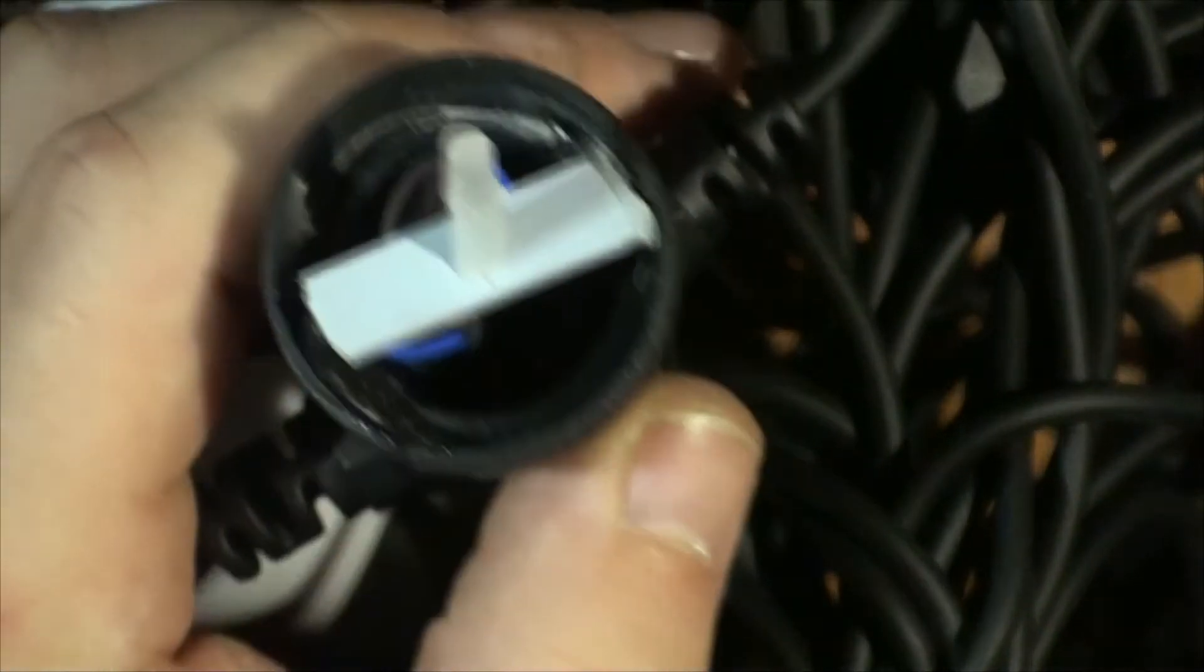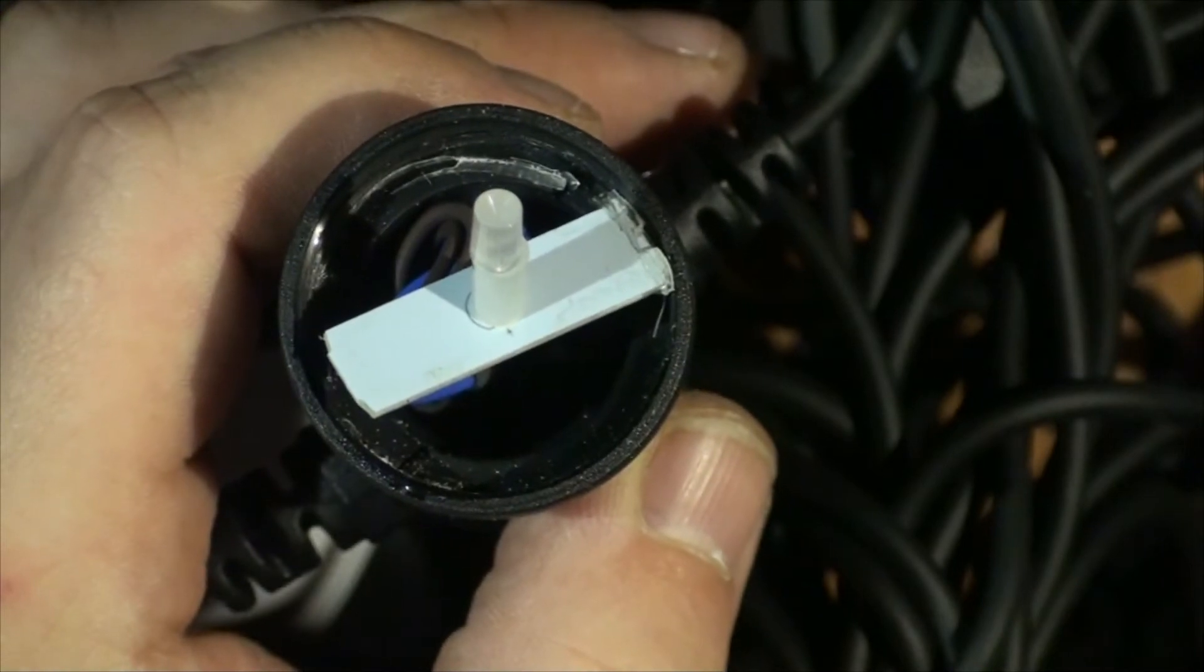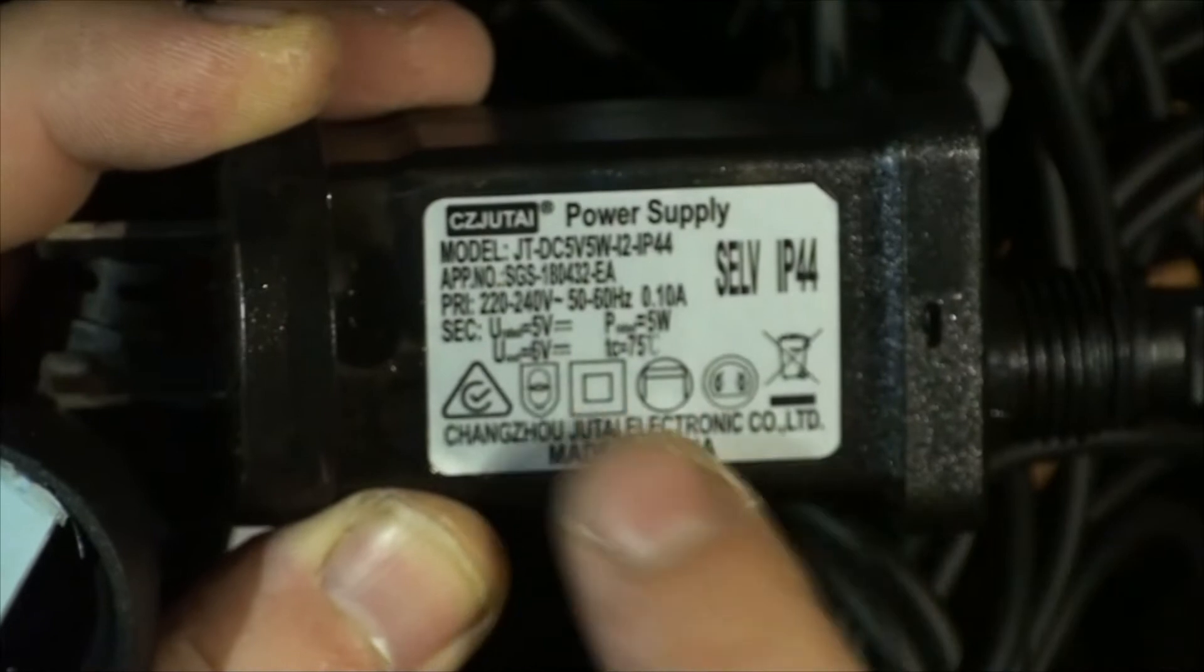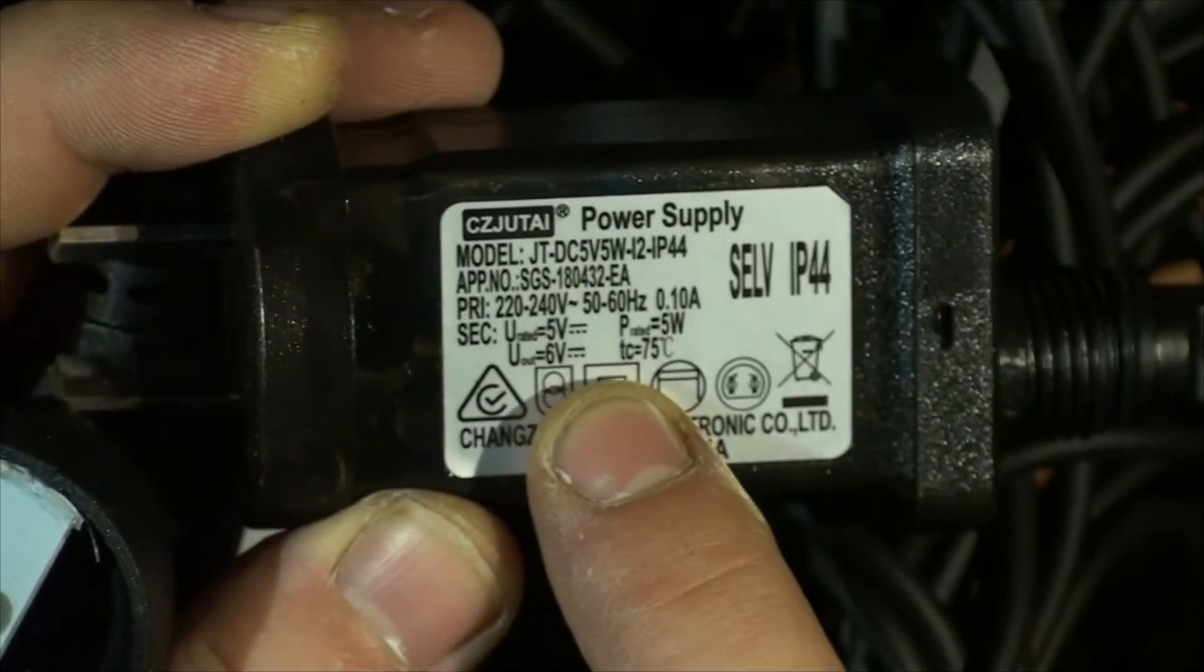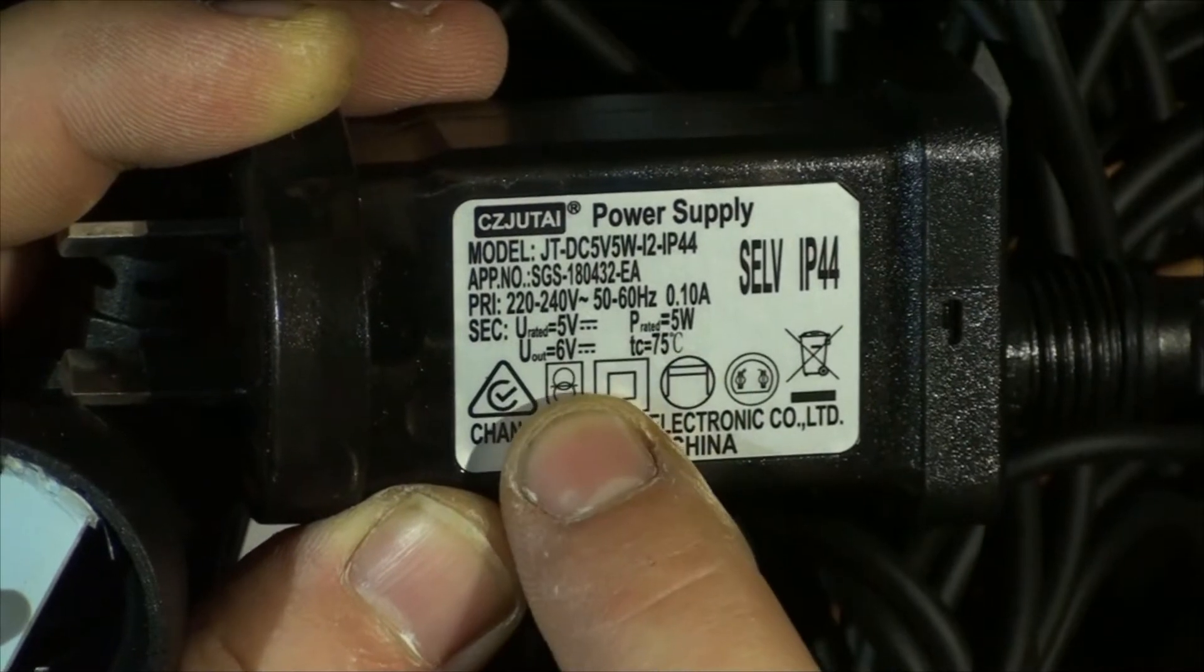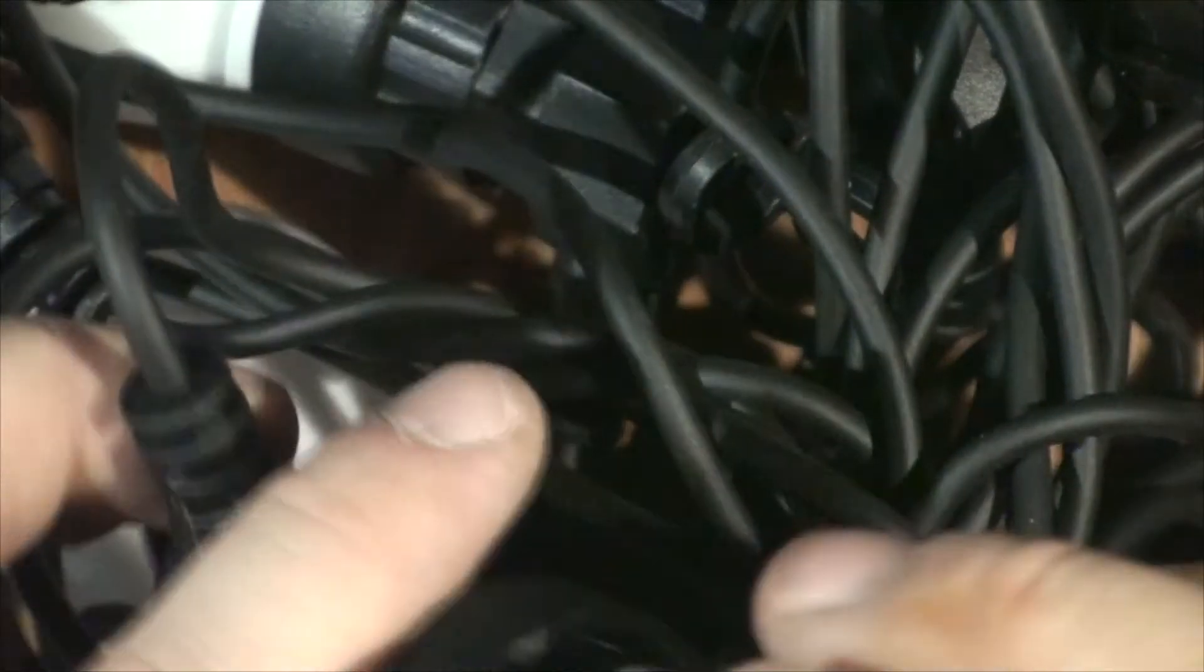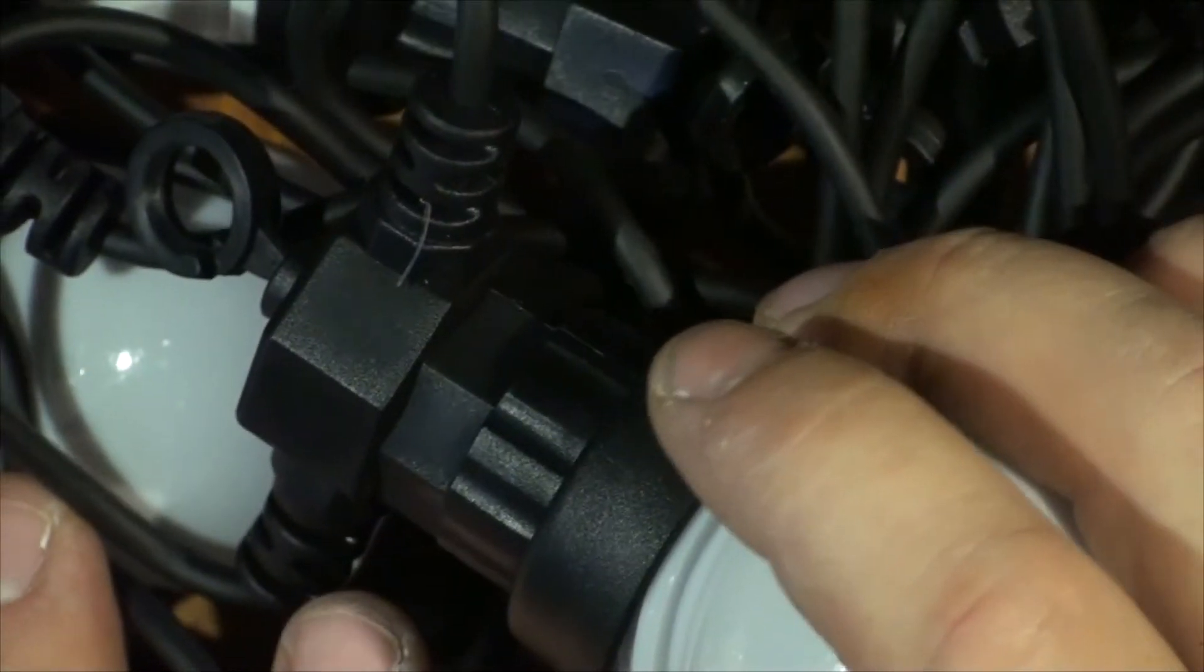If we look at the power supply, let's take a quick glance at it. It is secondary 5 volts rated. And output is 6 volts. So it's just 6 volts. Very interesting. So let's open the power supply up.